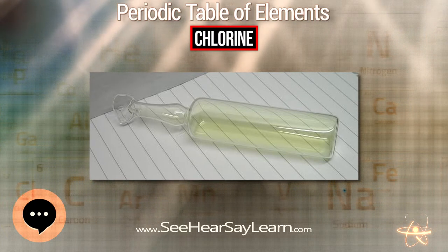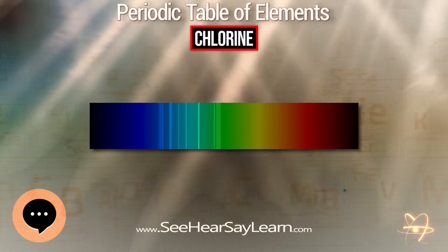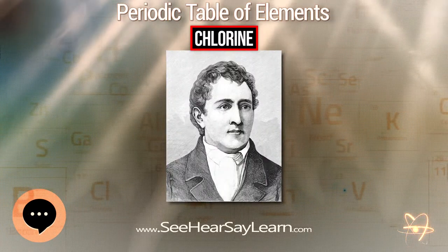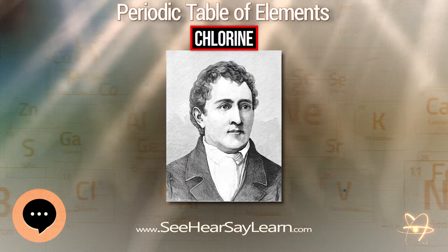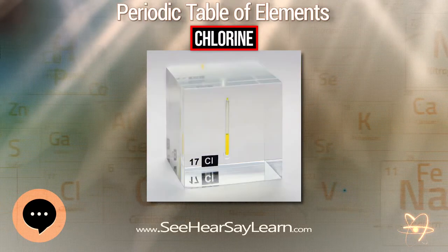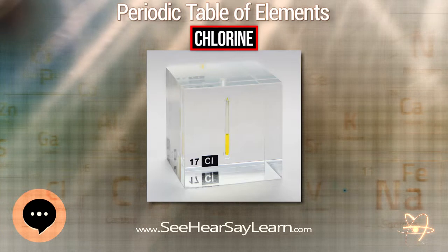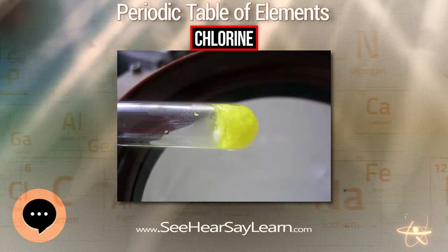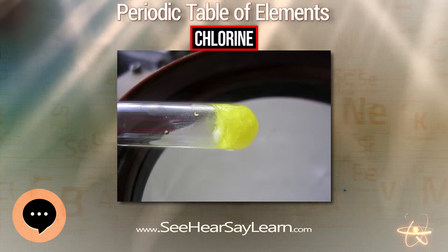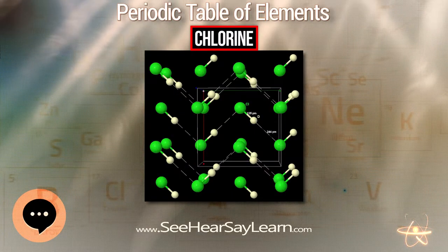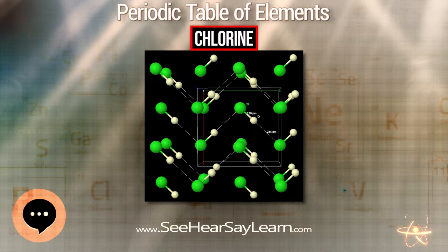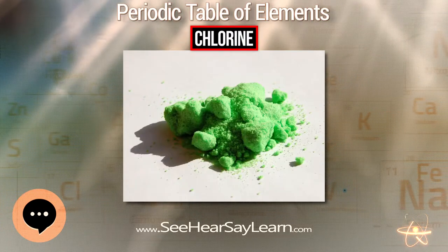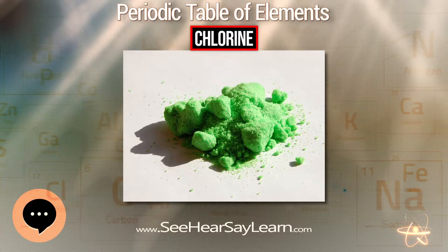The most common compound of chlorine, sodium chloride, has been known since ancient times. Archaeologists have found evidence that rock salt was used as early as 3000 BC and brine as early as 6000 BC. Its importance in food was well known in classical antiquity and it was sometimes used as payment for services for Roman generals and military tribunes. Elemental chlorine was probably first isolated around 1200 with the discovery of aqua regia and its ability to dissolve gold.